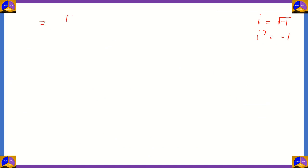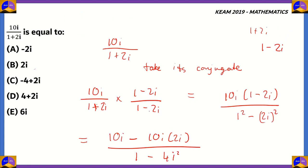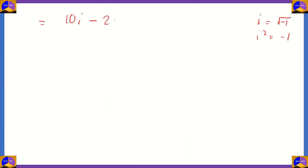On the numerator side, it's 10i minus 20i squared divided by 1 minus 4i squared. We'll put the value of i squared as minus 1 on both sides. So, you'll get 10i plus 20 divided by 1 minus minus 4.